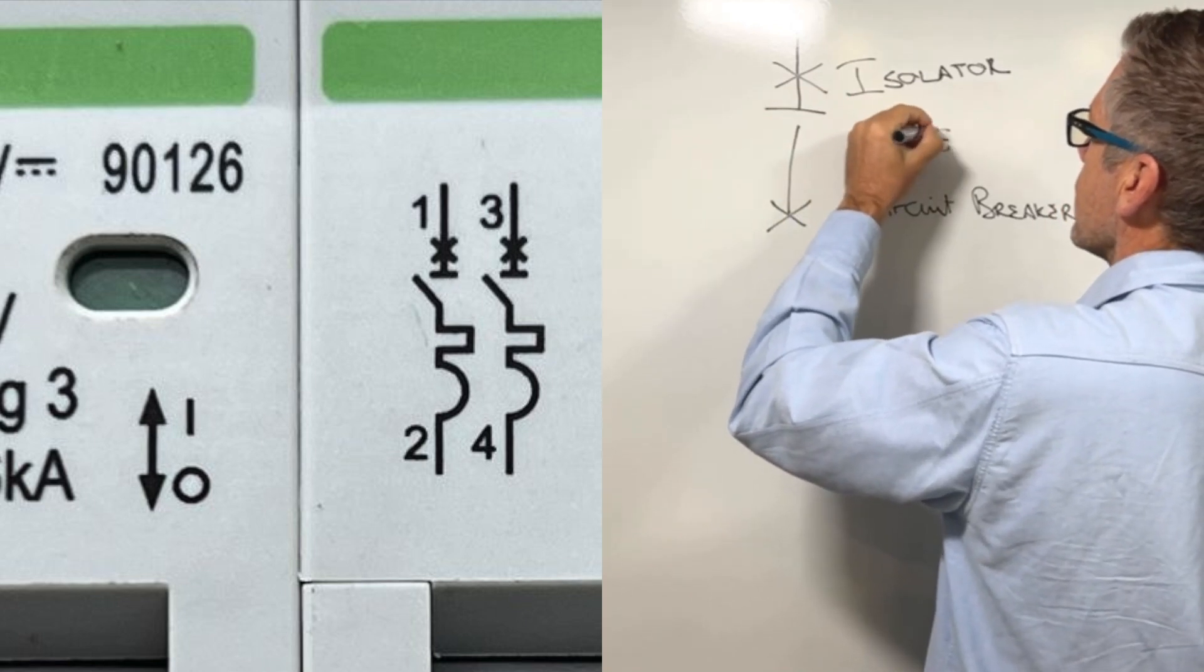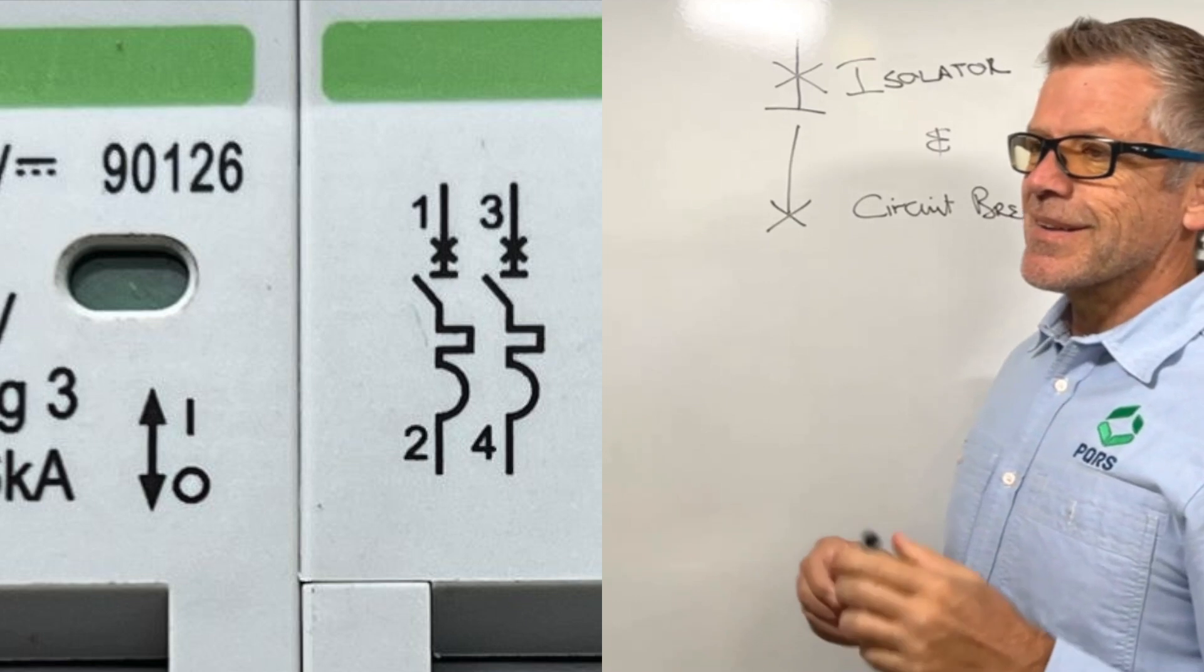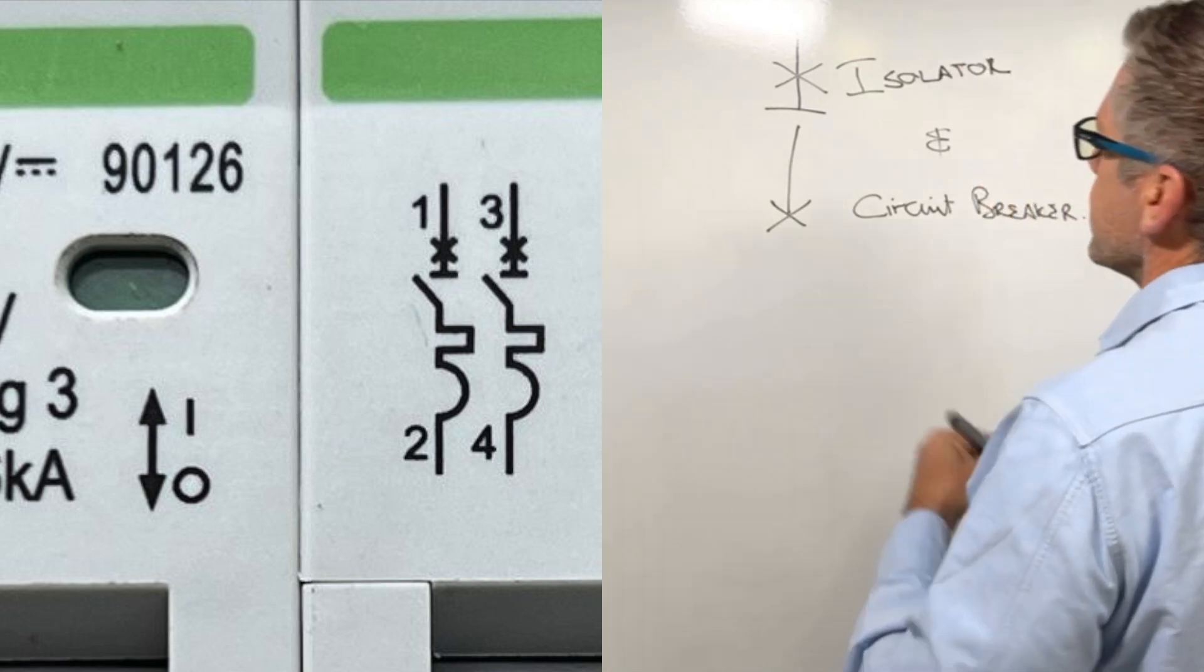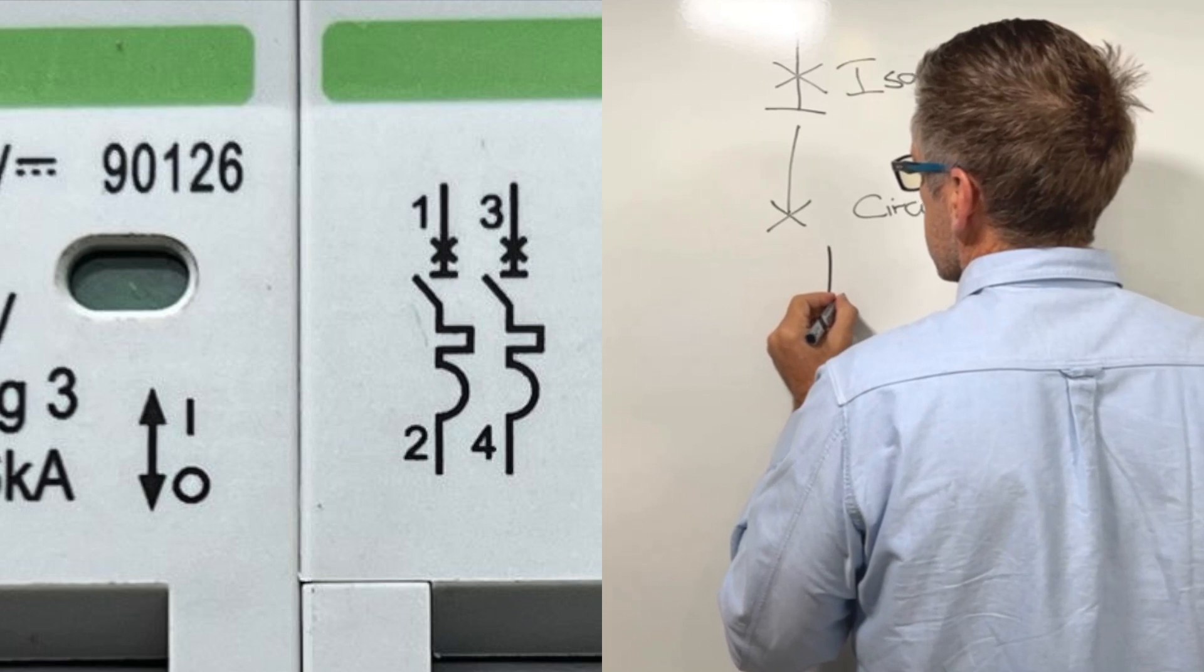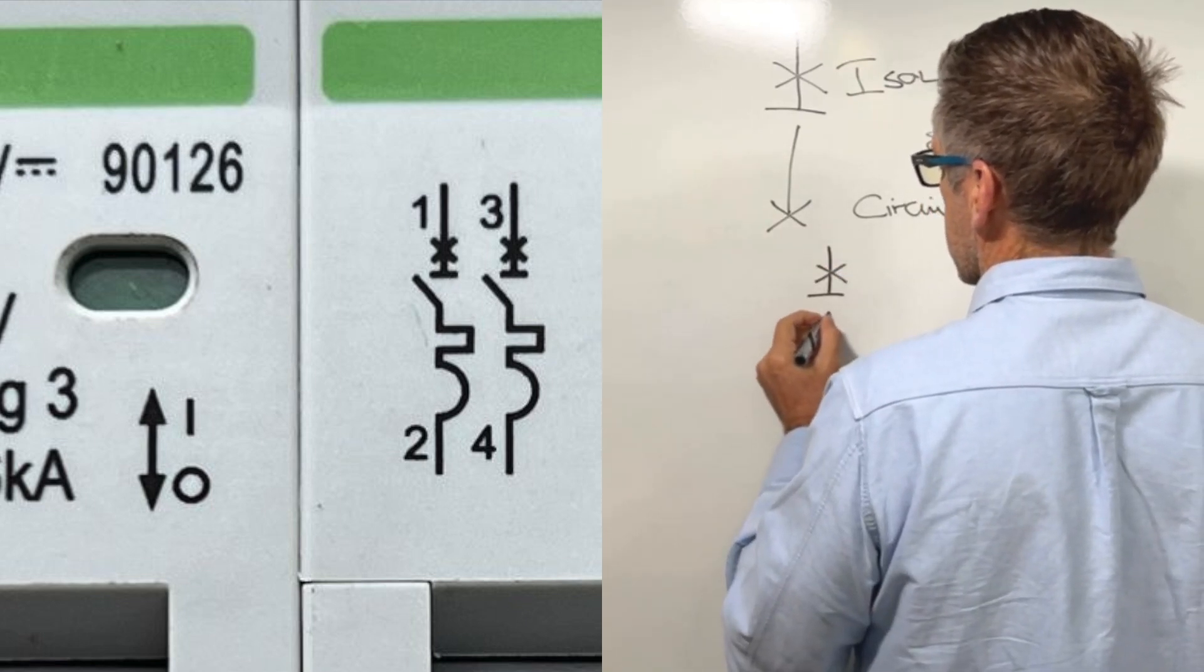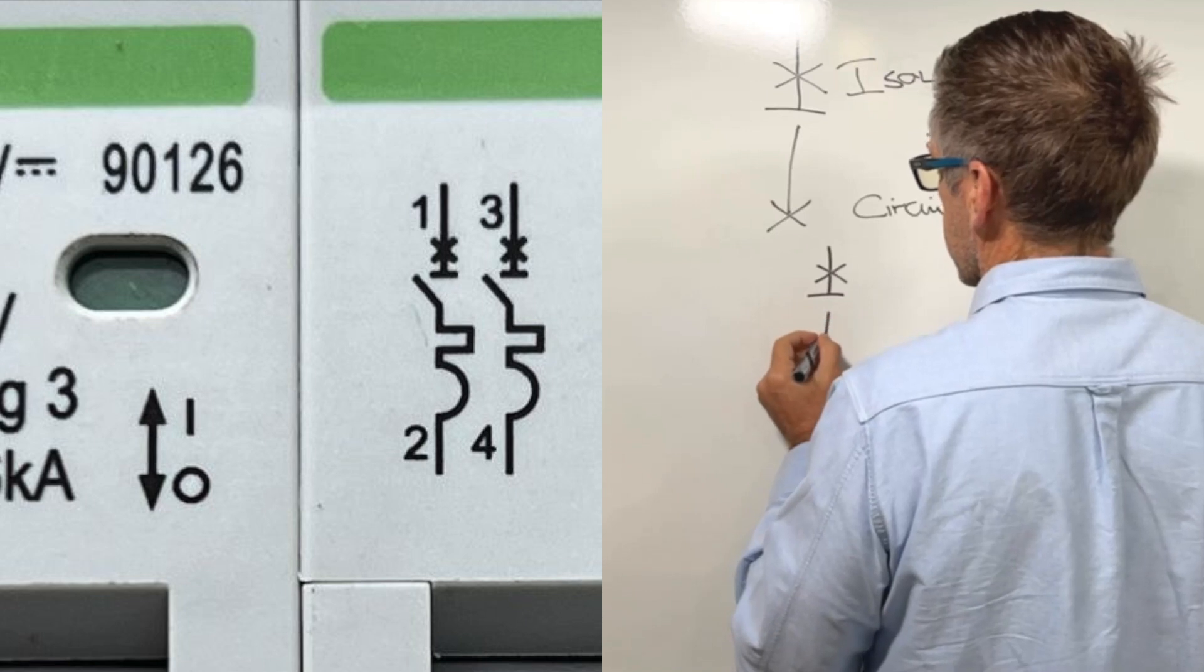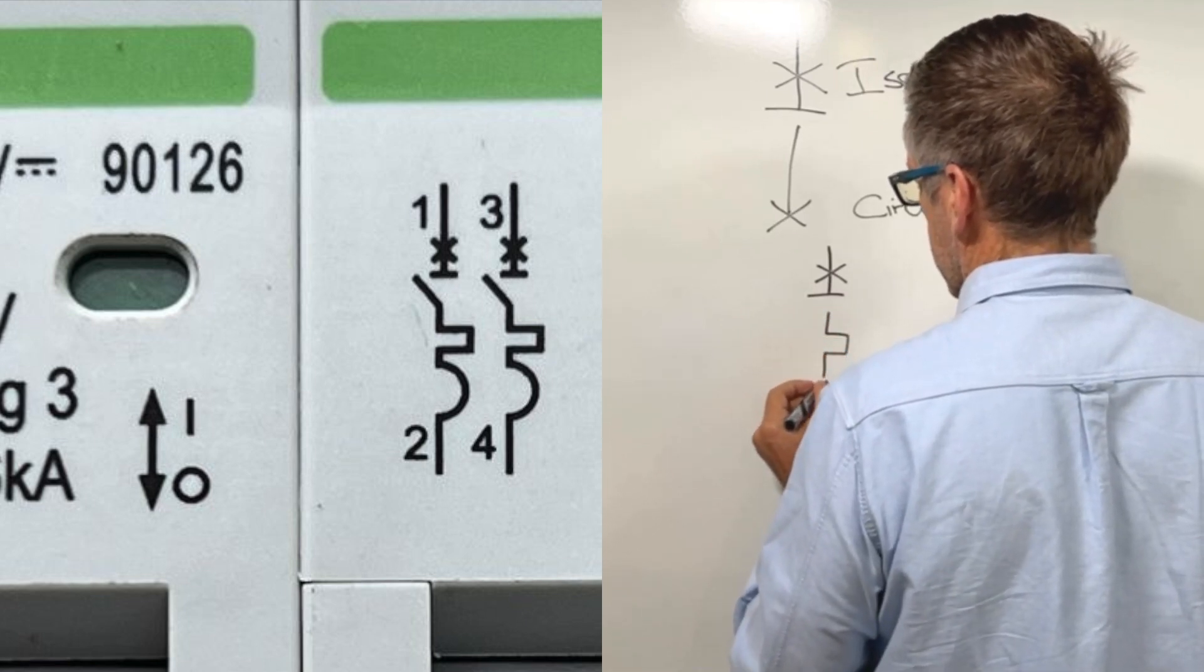It can fulfill the function of both being an isolator and a circuit breaker. So in that symbol on the circuit breaker, we've got a section that looks like that and then it runs down. It's got a little square indicator.